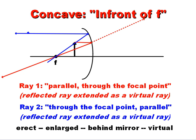And for my blue one, I went through the focal point. The parallel one was the reflected one. I'm just going to extend that back. And the point where those two reflected virtual extended rays meet is where your image is going to be.